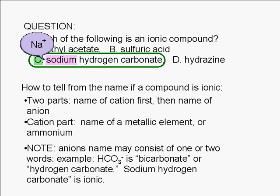Note that names of anions may consist of one word or two words as in the case we have here. The hydrogen carbonate part of the name given in choice C refers to HCO3 with a negative one charge. It's also called bicarbonate.